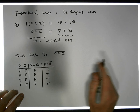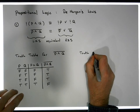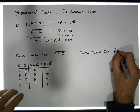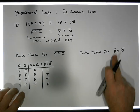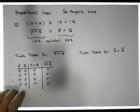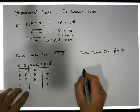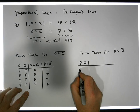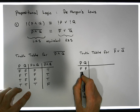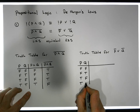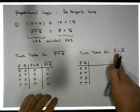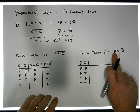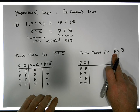Now let's do the truth table for the right-hand side, which is P bar ORed with Q bar — that is, the negation of P ORed with the negation of Q. Once again there are only two inputs, P and Q, so we build a truth table with the same four input combinations: false-false, false-true, true-false, and true-true. Before we can apply the OR, we must have a single truth value on the left and a single truth value on the right. Currently we have proposition P and its negation, so we need to negate the P's first.